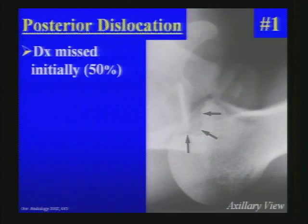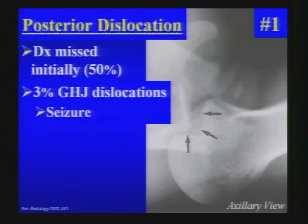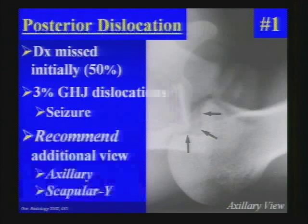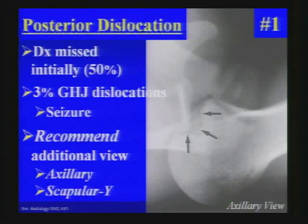If you missed this case, you're in good company — the diagnosis is missed initially half the time. They're only about 3% of all glenohumeral joint dislocations, commonly associated with a preceding history of seizure. If given just the frontal view, one view is no view. You need to recommend an additional view like an axillary view or a scapular Y view to confirm the posterior dislocation.